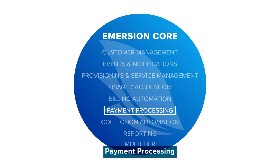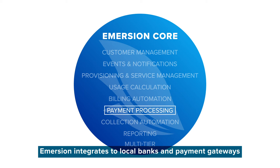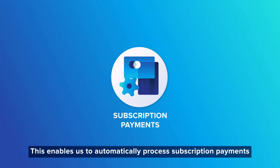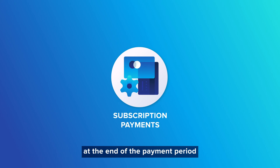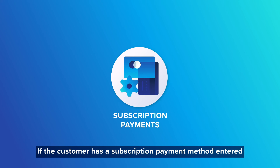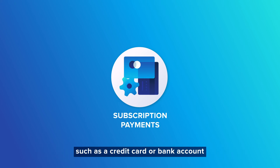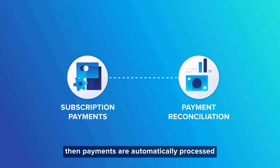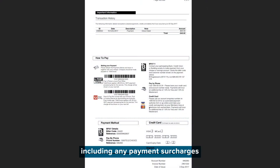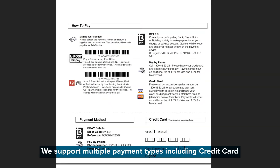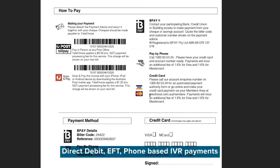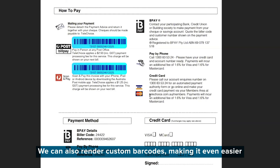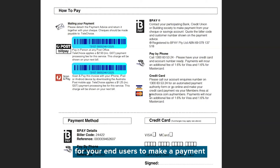Payment processing: Immersion integrates with local banks and payment gateways, enabling us to automatically process subscription payments at the end of the payment period and take ad hoc payments as required. If the customer has a subscription payment method entered, such as a credit card or bank account, then payments are automatically processed and reconciled against the account, including any payment surcharges. We support multiple payment types including credit card, direct debit, EFT, phone-based IVR payments, agent-collected payments, and more. We can also render custom barcodes, making it even easier for your end users to make a payment.